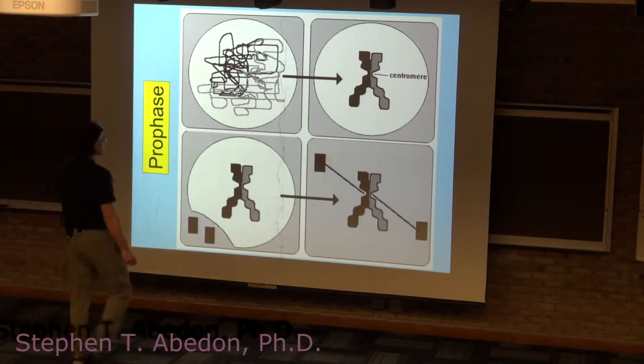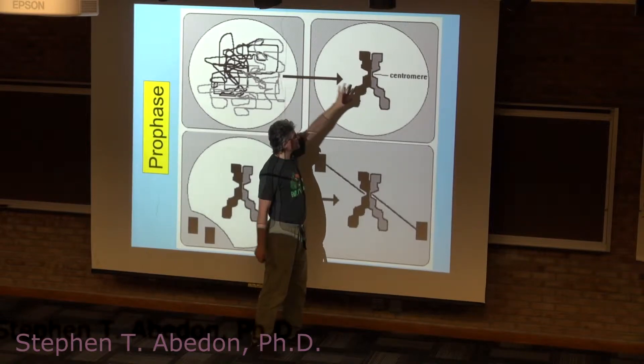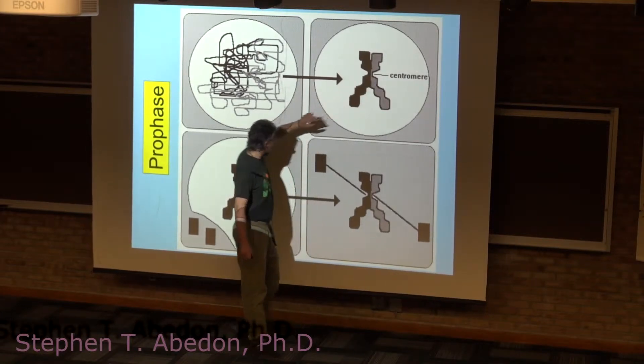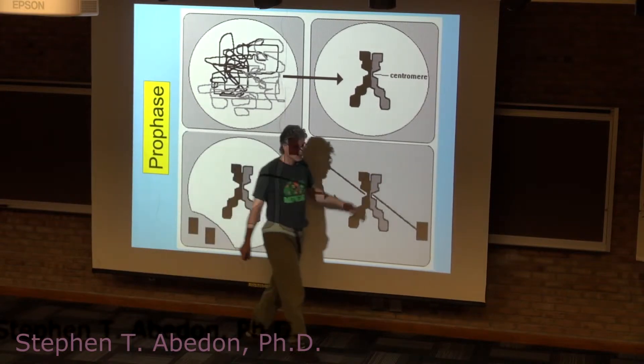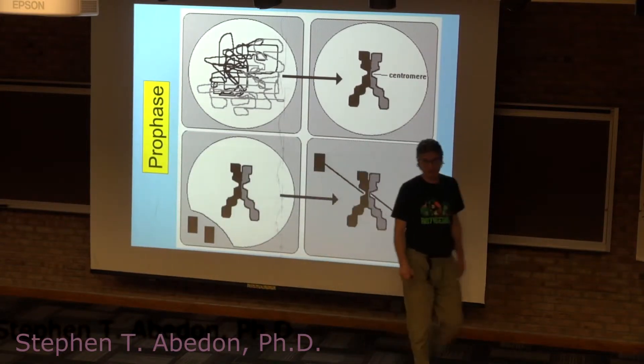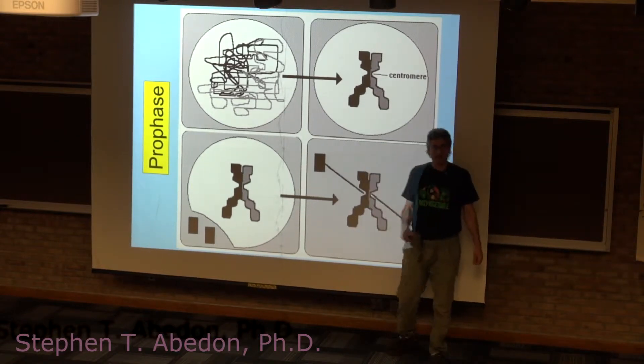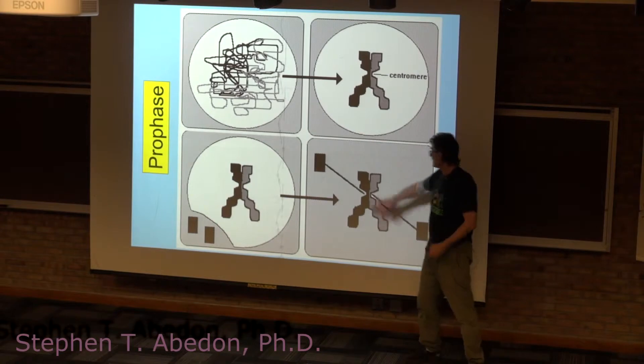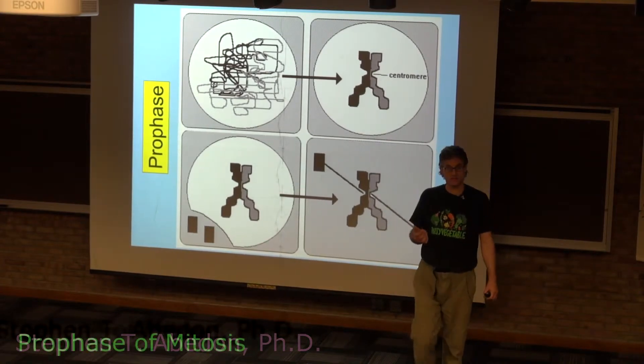Here we have interphase state going to compacting down of the chromosomes, and here we have the chromosomes being connected to the kinetochore microtubules, which are connected to the centrosomes at either end. Eventually these chromosomes are going to make their way to the center of the cell, the metaphase plate.